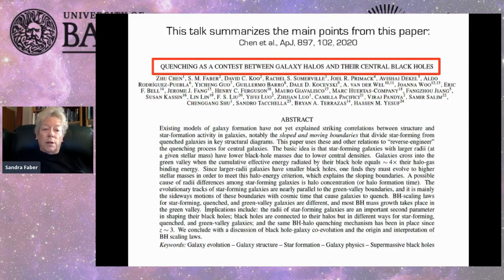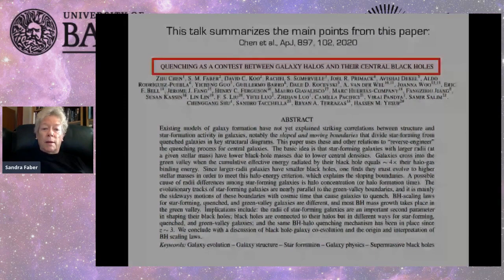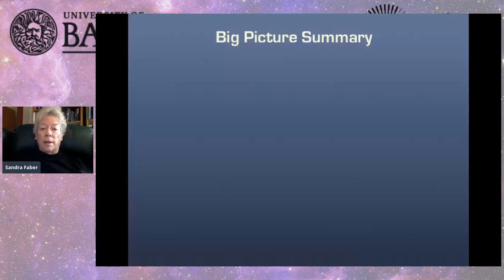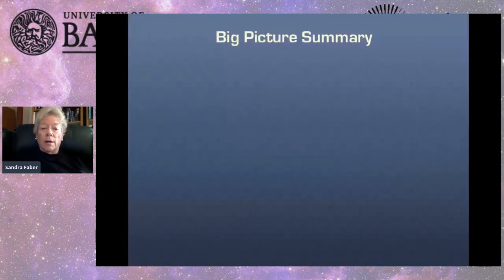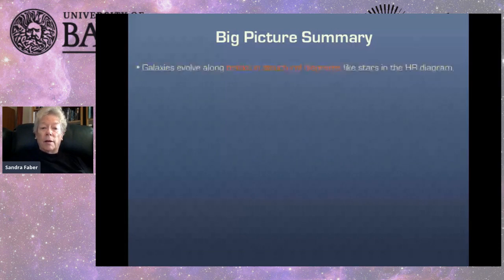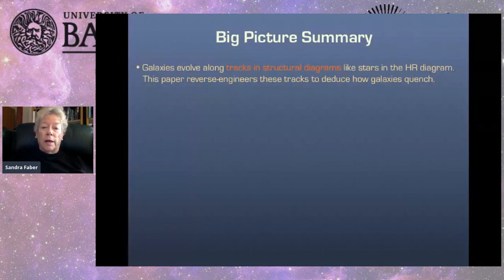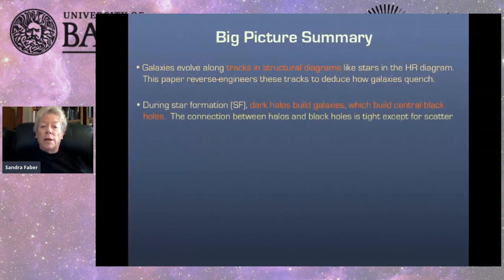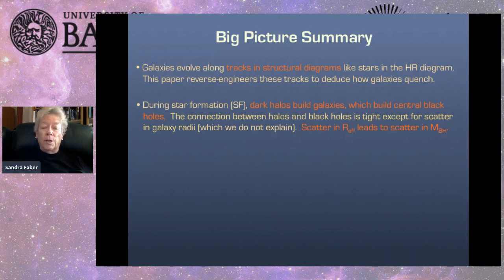The basic notion is that quenching is a contest between galaxy halos and their central black holes. For those who might not be able to stay the entire hour, here is a big picture summary. The first idea is that galaxies evolve along tracks in structural diagrams analogous to the HR diagram. During star formation, halos are building galaxies, which in turn build central black holes. The connection between halos and their black holes is tight, except for scatter in galaxy radii, which is not explained in the model.